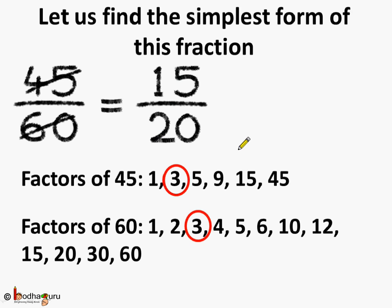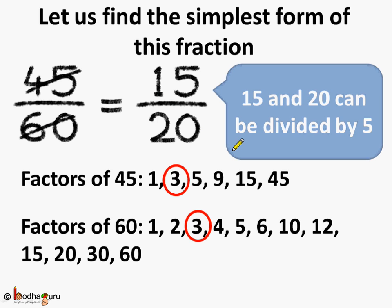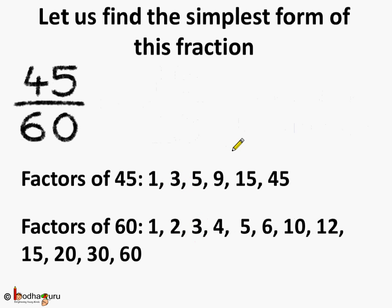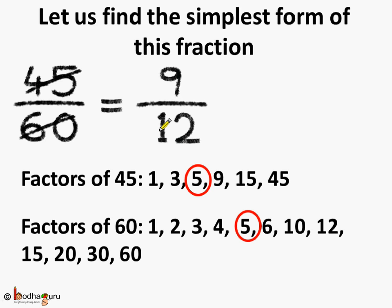But this fraction can be further reduced — you know it can be divided by 5. Now let's try another factor of 45 and 60, which is 5. So let's divide both the numerator and the denominator by 5. 5 9s are 45 and 5 1s are 5, 5 2s are 10, making 20. So this fraction is reduced to 9 by 12.